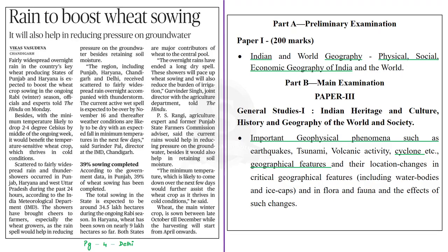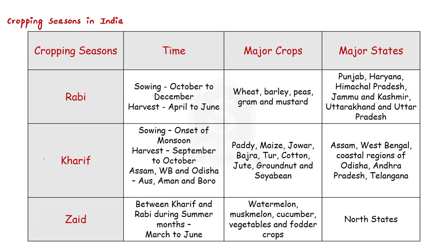The next news article states that rain in key wheat-producing states of Punjab and Haryana is expected to boost wheat crop sowing in the ongoing rabi season. The minimum temperature is likely to drop 2 to 4 degrees Celsius this week, which would benefit the temperature-sensitive wheat crop that thrives in cold conditions. Wheat requires moderate temperature and rainfall during its growing season and bright sunshine at the time of harvest. Wheat is the main winter crop, sown between late October to December, while harvesting starts from April onwards.